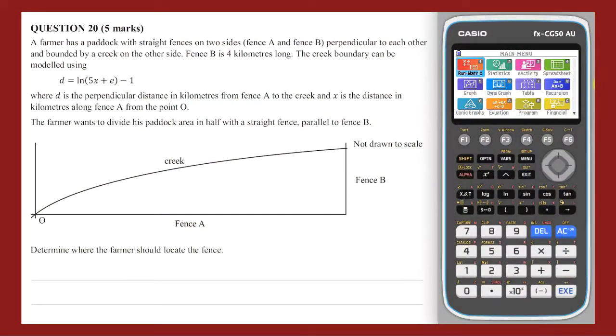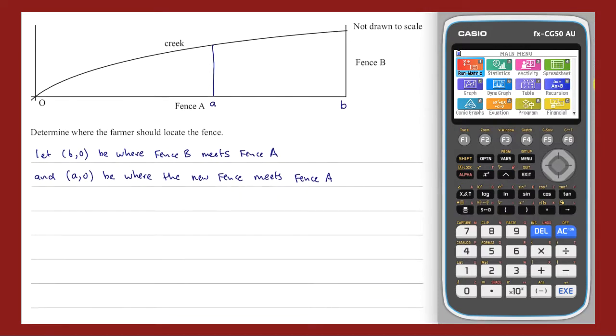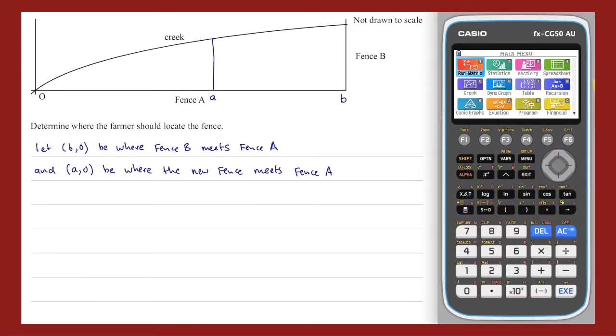Question 20. Based on the information provided about the paddock that is to be bisected, I can define B as the x-value of the point where fence B meets fence A, and define A as the x-value of the point where the new fence meets fence A. As fence B is 4km long, the value of D is 4 at point B. That means that the natural log of (5B plus E), subtract 1, is equal to 4. From this equation, I can obtain the value of B.